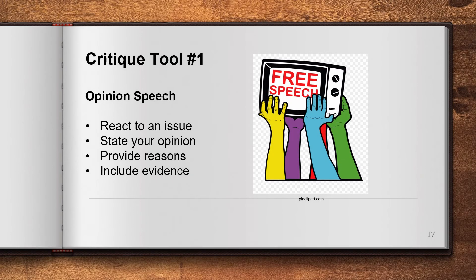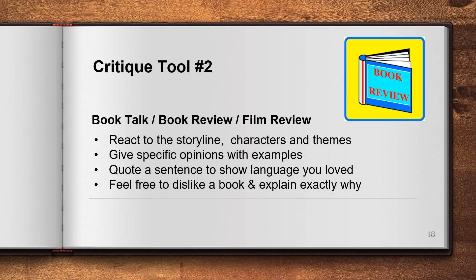There are some really good critique tools we can use to give our opinion. Opinion speeches are really fantastic — it's very important whenever you state your opinion to provide reasons and include evidence for that opinion. Critique tool number two is the book talk, book review, or film review. This is when you give an opinion about something you've just read or viewed. Feel free to dislike it as well, but always when you're critiquing, give your reasons for your opinion.